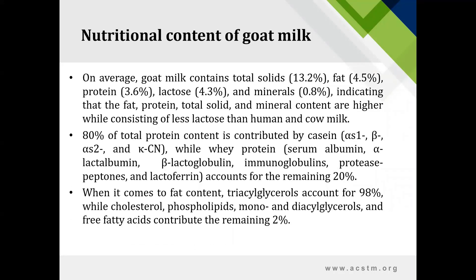Looking at the nutritional aspects of goat milk, goat milk contains comparatively higher content of fat, protein, total solids and minerals than human and cow milk, while the lactose content is relatively lesser. Protein content of goat milk is divided into two categories. Firstly, casein protein consisting 80% of total protein content, comprising alpha-S1, alpha-S2, beta and kappa casein. Secondly, whey protein contributes the remaining 20%, including serum albumin, alpha-lactalbumin, beta-lactoglobulin, immunoglobulin, protease, peptones and lactoferrin.